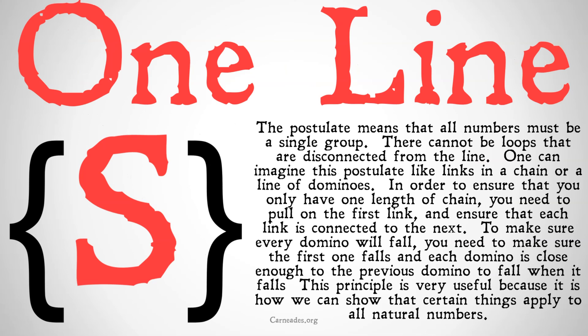We can think of this as saying that the natural numbers are just in one single straight line. If something happens to zero, and if something happens to the number before you, then it will happen to you as well, then that thing has to happen to all numbers. There cannot be any loops that are disconnected from the line.